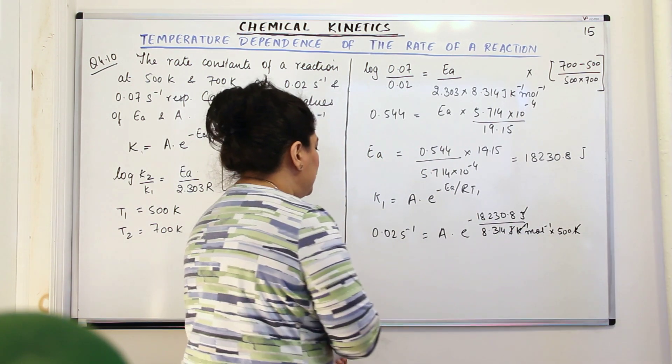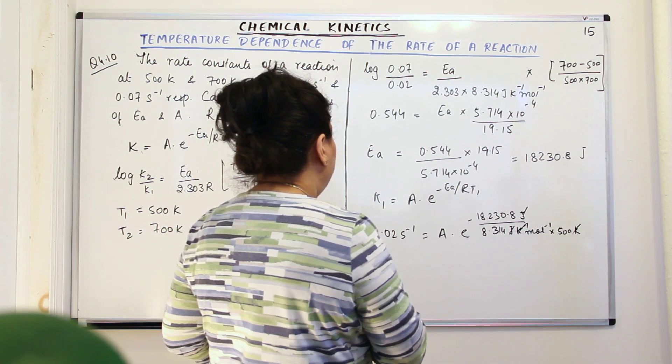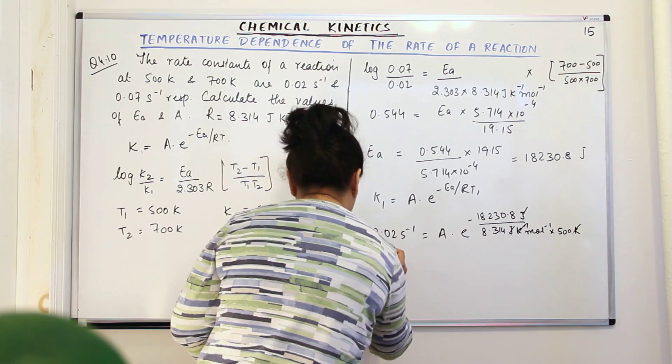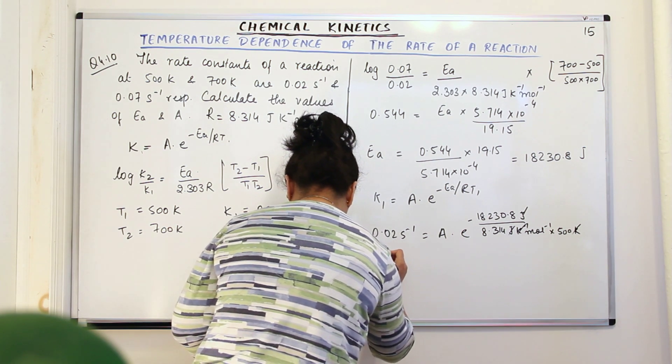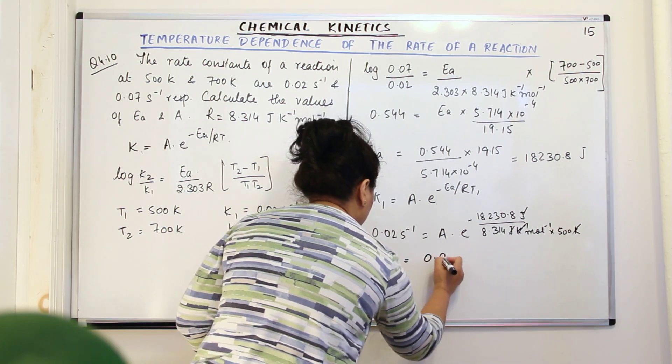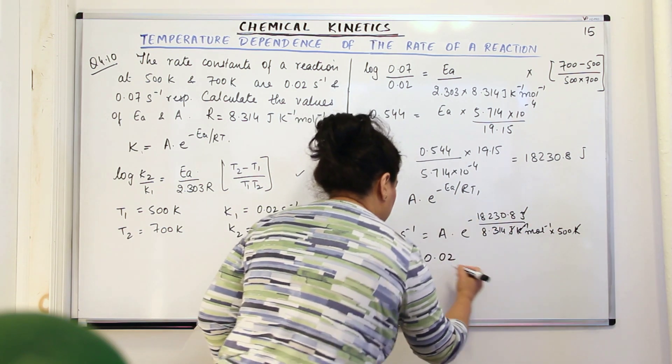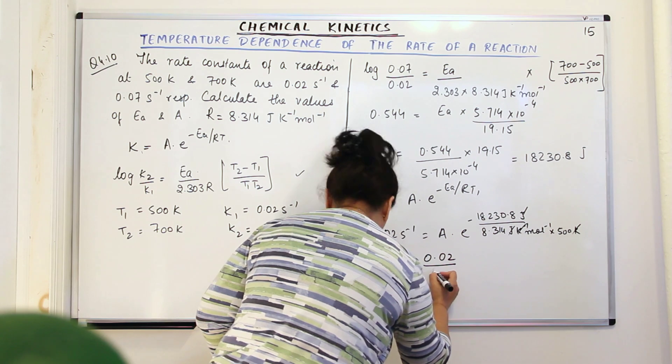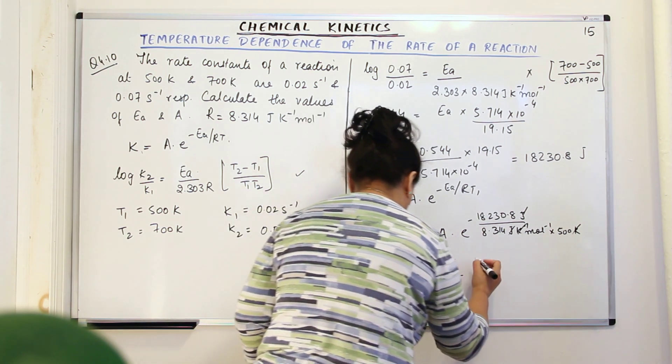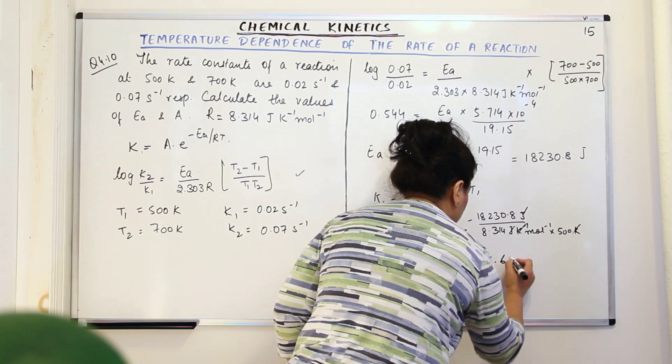So when you solve this, you'll get 0.02. So A would be equal to 0.02. And when you solve all of this, it comes out to be upon 0.012, which is equal to 1.61.